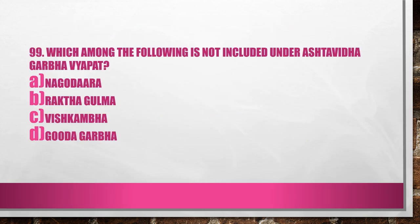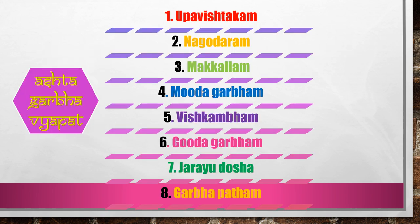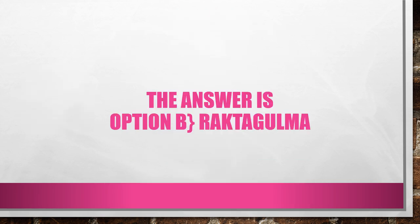Question 99. Which among the following is not included under Ashtavitha Garba Vyabath? A. Nagodara, B. Rectagulma, C. Vishkambha, D. Kounda Garba. The eight Garba Vyabath are: Uba Vishtagam, Nagodaram, Makkallam, Moodagarbam, Vishkambam, Ghudagarbam, Jarayi Dosham, Garba Baatham. So the answer is Option B, Rectagulma.